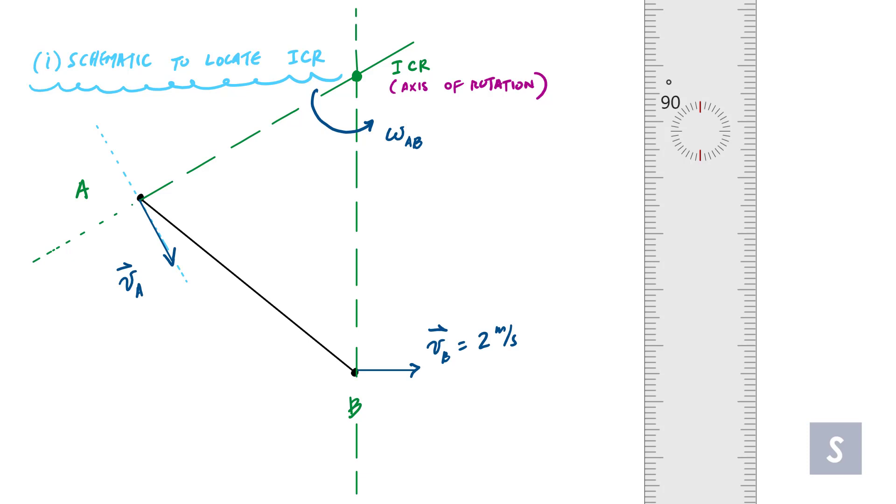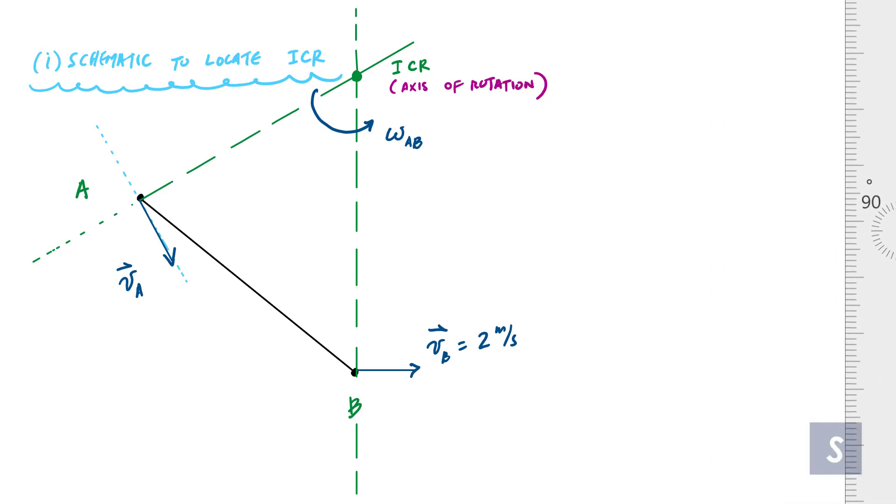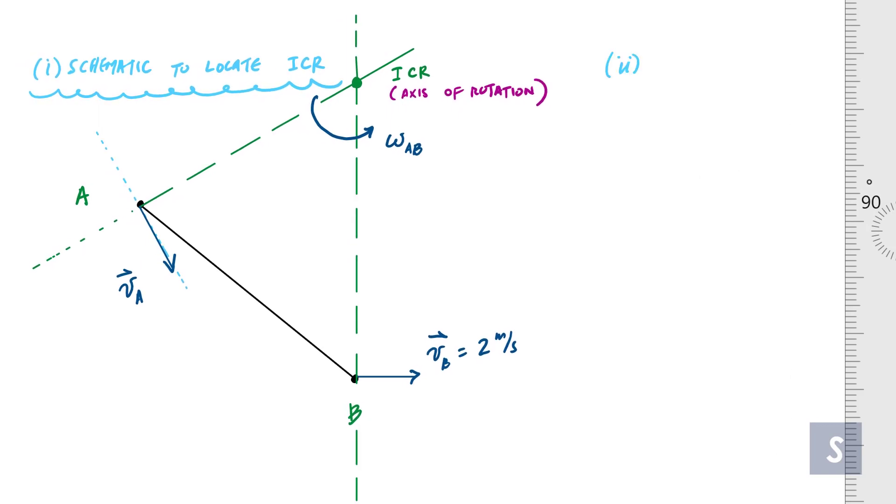All right. And so now I have a lot of really good information. I can use my relationships, my rotation relationships or equations. And so I know that the relationship between VB and omega AB, the magnitude of VB is equal to omega AB, the angular velocity times the distance from the axis of rotation to that point. So that would be RB from the instantaneous center of rotation. And that distance is this length right here. This is RBIC.